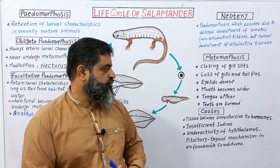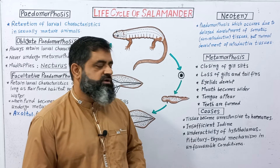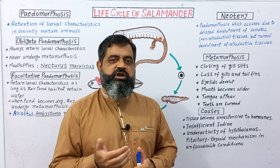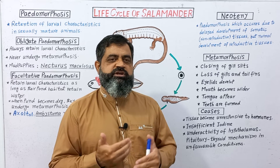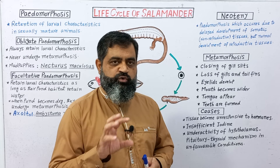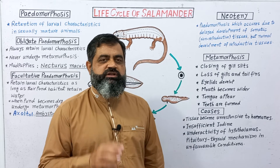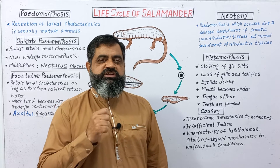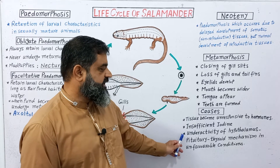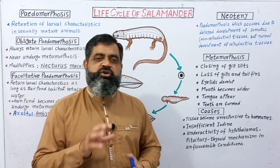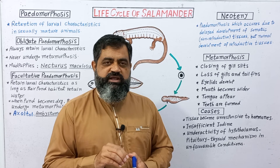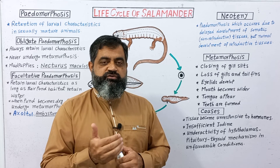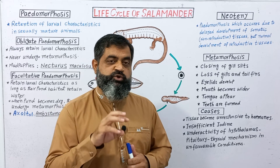The most probable causes of pedomorphosis and Neoteny are hormones. Number one, tissues become unresponsive to hormones. Usually the thyroid gland creates hormones which enable the animal to change into adult form through metamorphosis, but certain cells do not respond to hormones like T4 released by the thyroid gland. Insufficient iodine in the diet can also lead to reduced or faulty hormone production, causing failure of metamorphosis. Underactivity of the hypothalamus-pituitary-thyroid mechanism — since all these glands work together to maintain metamorphosis — can also lead to Neoteny or pedomorphosis.